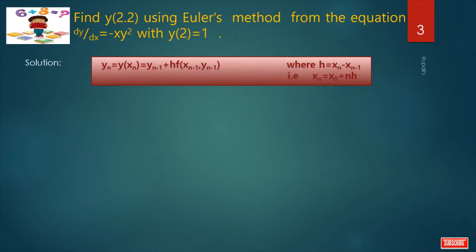It is an initial value problem and the value y(2) equals to 1 is given and this is the formula for Euler's method. What is x0? It is 2. What is y0? It is 1.